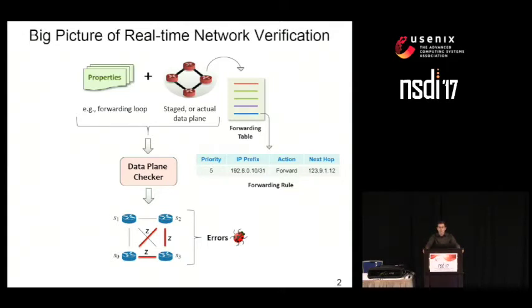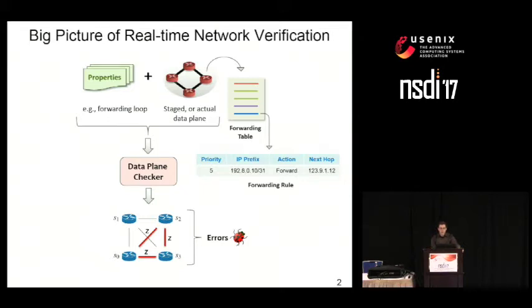More generally, the properties we are interested in are so-called reachability properties, which say something about how parts in the network are logically connected. This includes isolation properties, which concern parts of the network that should be logically disconnected. In addition to the properties we want to verify, there is the data plane, which can be thought of as a graph where each node consists of a forwarding table with single or multiple priority-ordered IP prefix-based forwarding rules. A data plane checker checks whether the given properties hold, and if not, produces a counterexample — illustrated by the red cycle at the bottom — which corresponds to some forwarding loop.